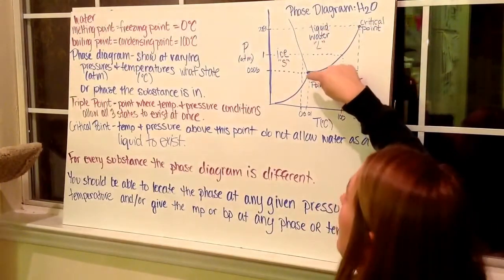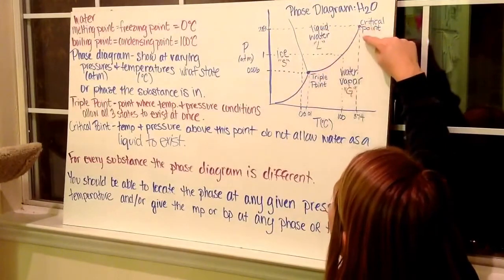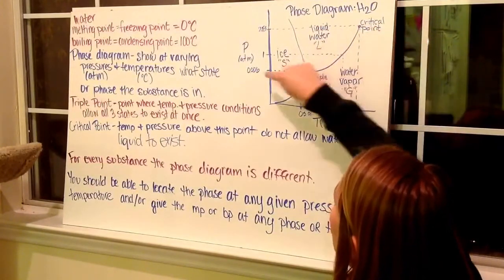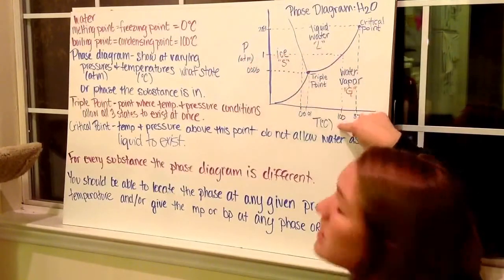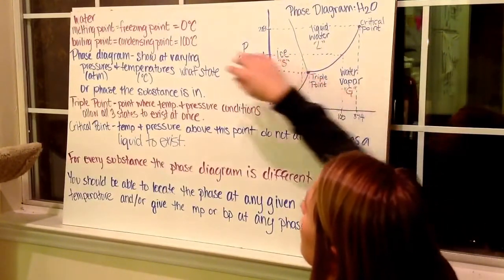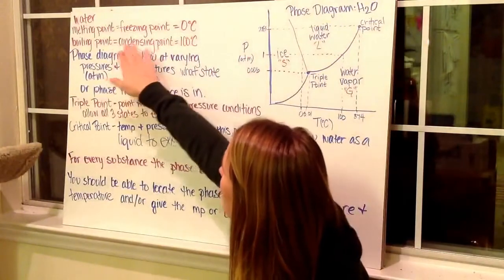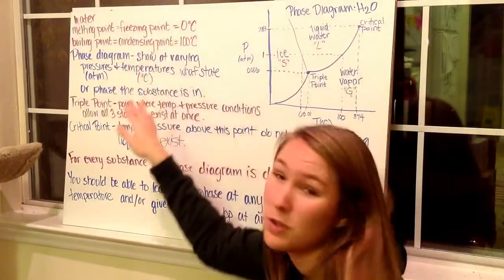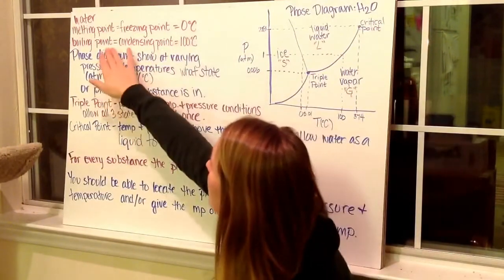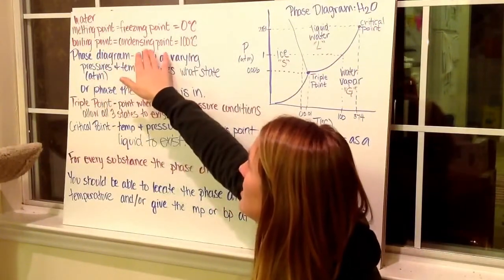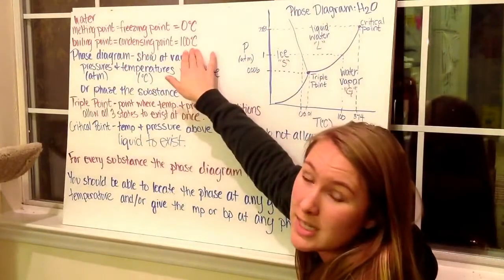In the center, we have a triple point. We also have a critical point. Pressure is in atmospheres, atm. Temperature is in degrees Celsius. So for water, we have a melting point, which is also the same as a freezing point because you melt and freeze at the same temperature, of zero degrees Celsius. A boiling point, which is equal to a condensing point, at 100 degrees Celsius.